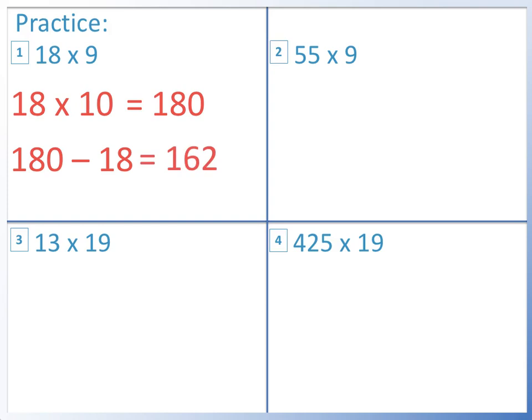Question 2: 55 times 9. 55 times 10 equals 550. We take away 1 lot of 55 from 550. This gives us 495.